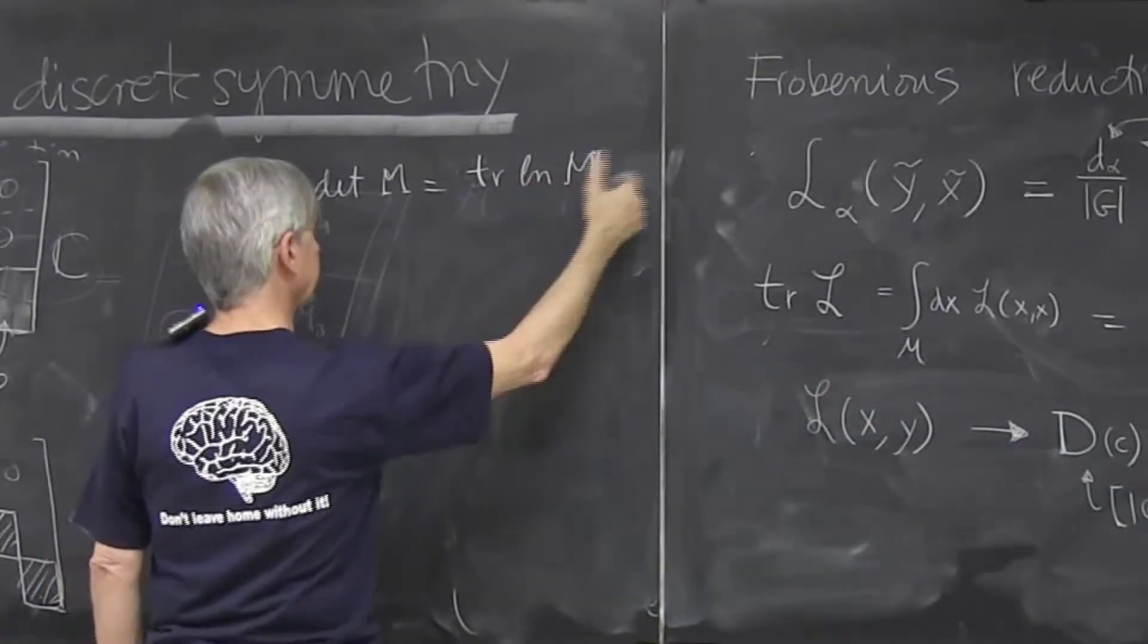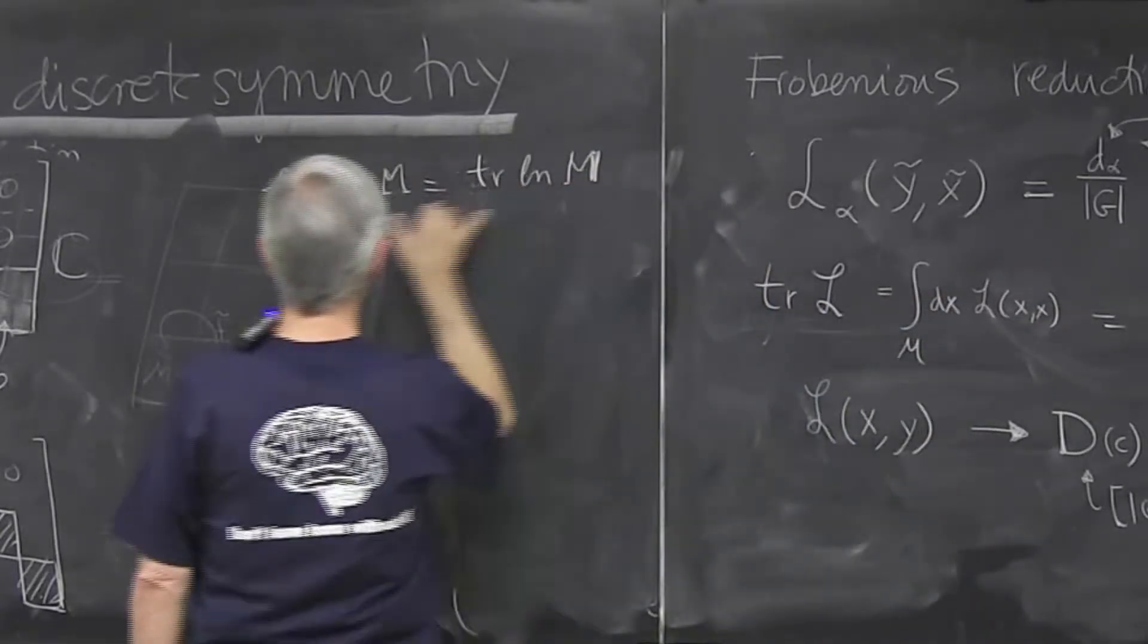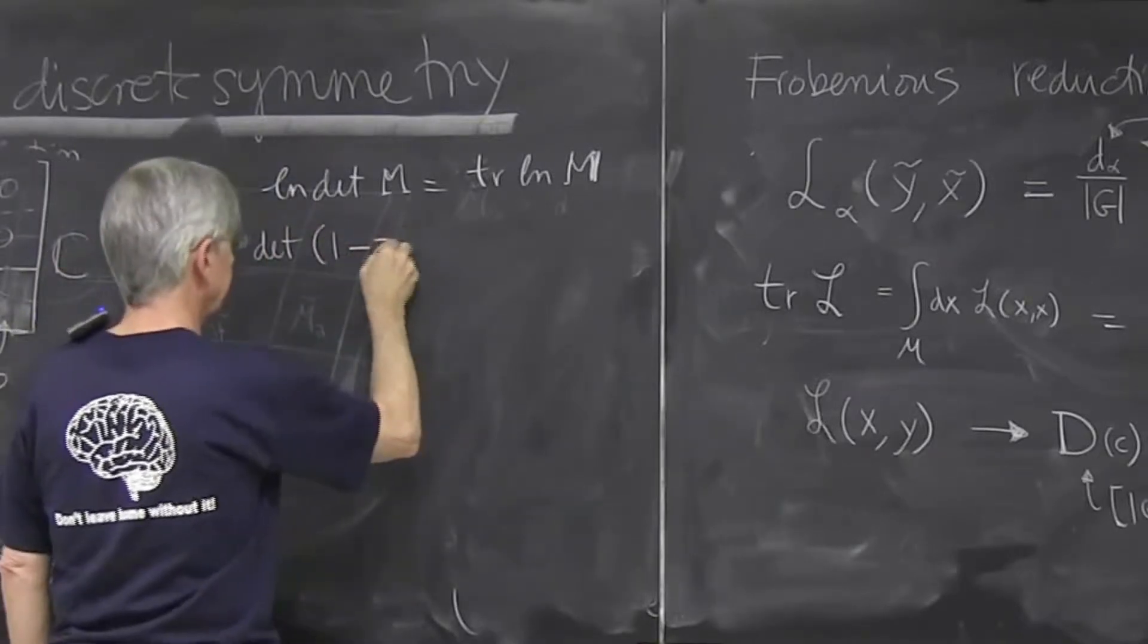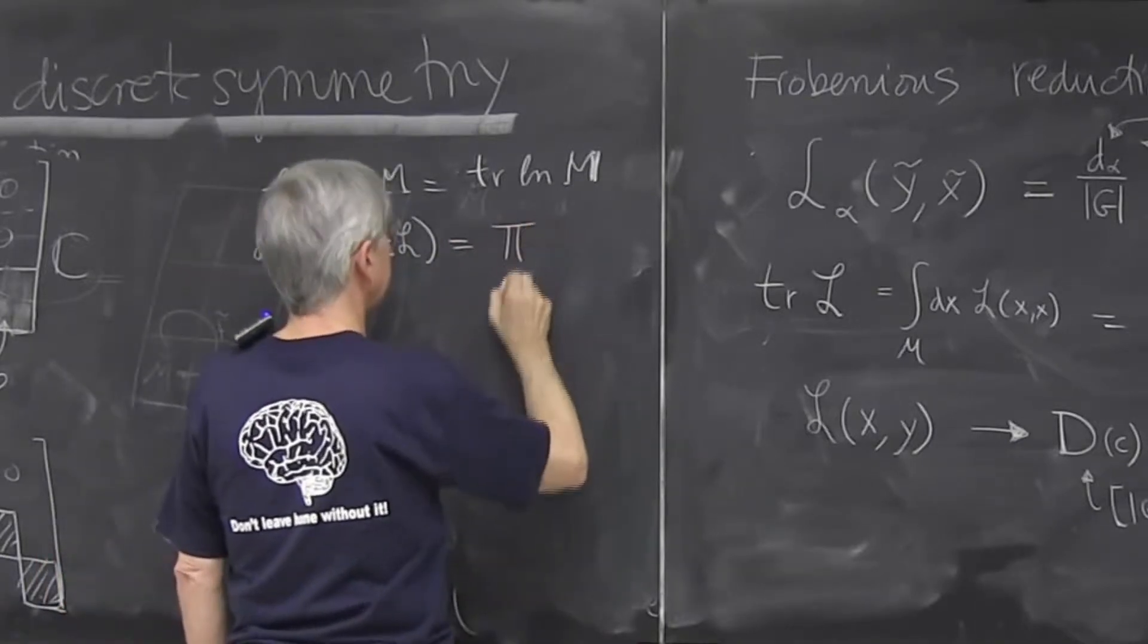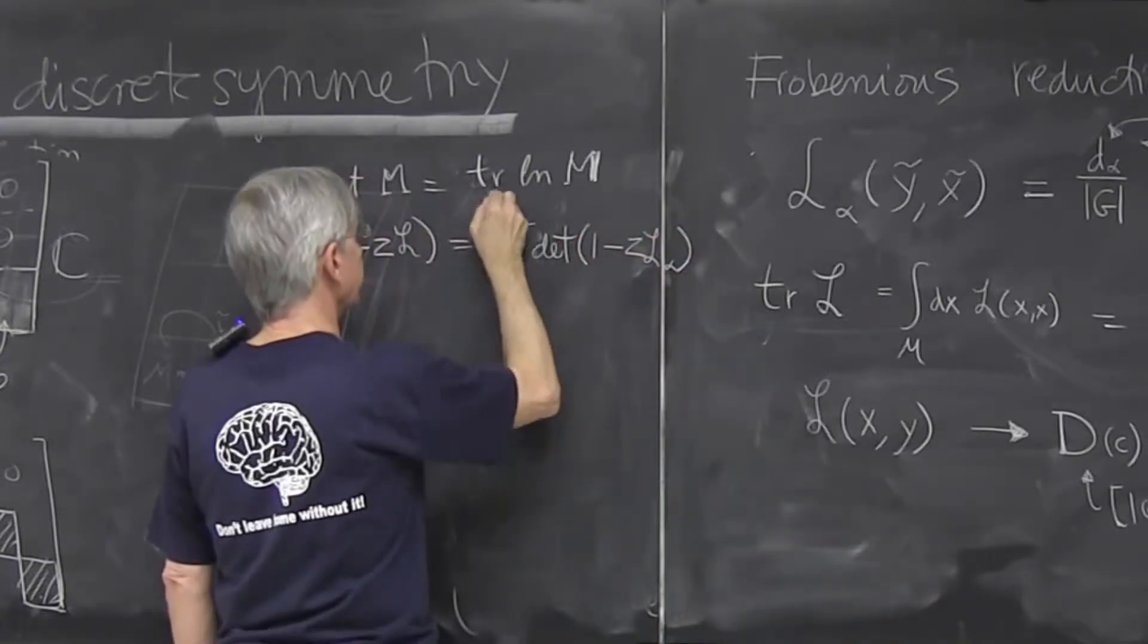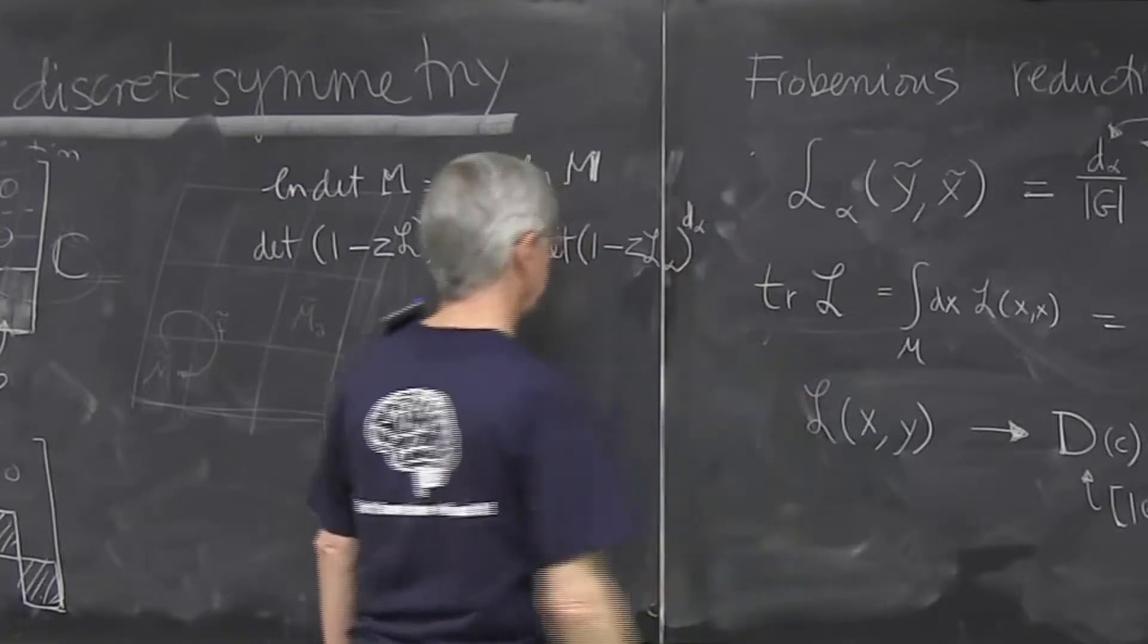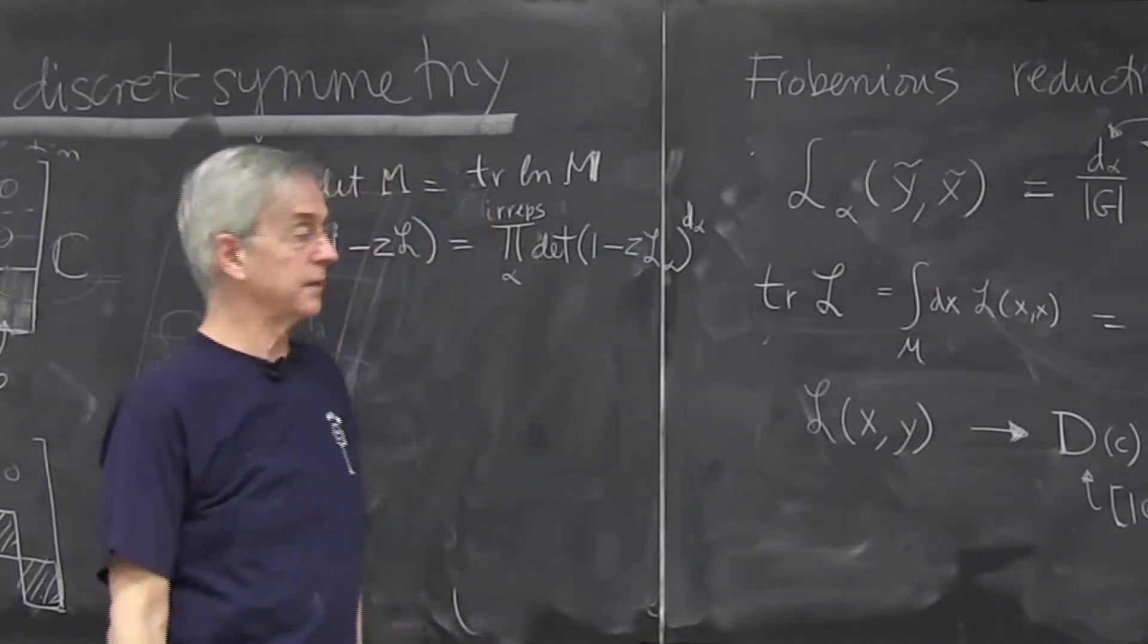And whenever we had this thing summing up into independent pieces, then determinant will get multiplied. So we finally get the determinant of 1 minus z of the original problem. We'll do the product of determinants of irreducible representations raised to the power alpha if irreducible representation of finite group is of dimension higher than one.